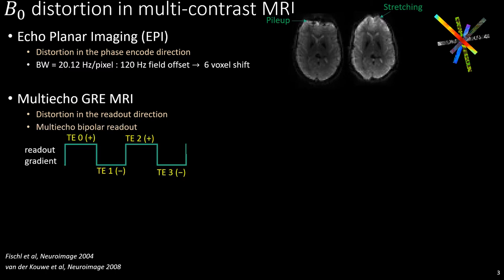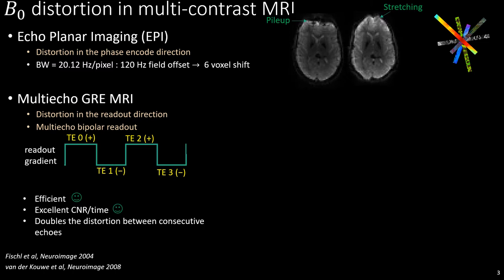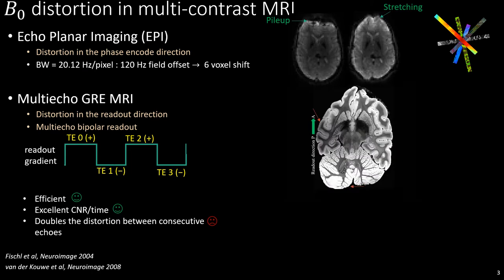It is common to encode consecutive echoes with opposite readout polarity, or bipolar readouts, which is great for efficiency and CNR but can double the voxel displacement or distortion between consecutive echoes. The animation toggles between the readout polarity, which is in the AP direction, to visualize the differential distortion between the echoes.